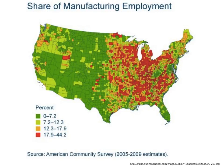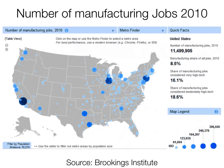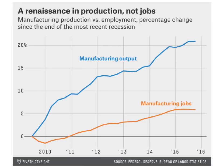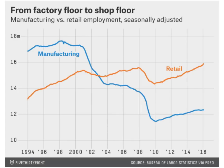Shifting our focus to general manufacturing in the United States, we can see manufacturing occurs primarily in the Rust Belt and Sunbelt regions. Manufacturing production versus employment percentage change since the end of the most recent recession shows that from 2012 onward, manufacturing output grew very steadily, but jobs grew much less — 20% output growth over six years, but only 5% job growth. We're seeing a big shift from a manufacturing-based to a service-based economy over the past 40 years.